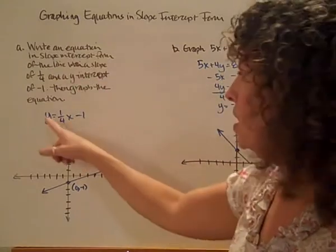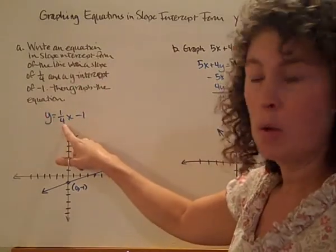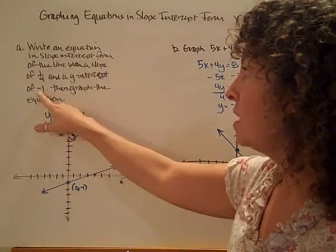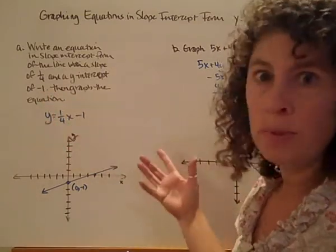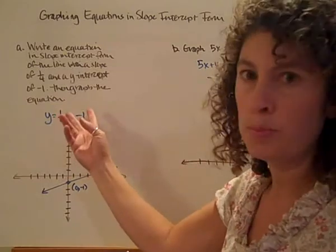So I've got y equals mx plus b. Y equals m, here goes my slope, times x, plus, and then I've got a negative 1 here so I can just write it as minus 1. So again, there's the plug-and-play version of this equation. I just plug them in there.